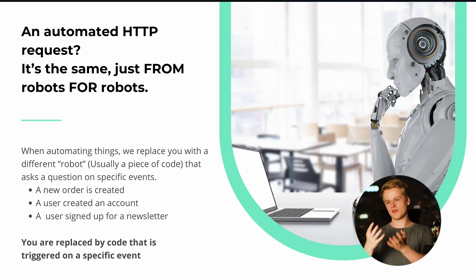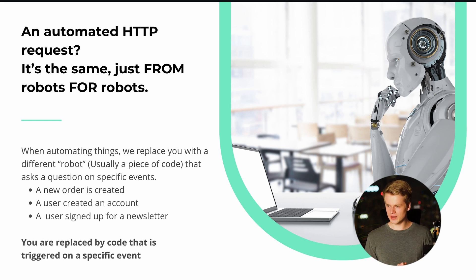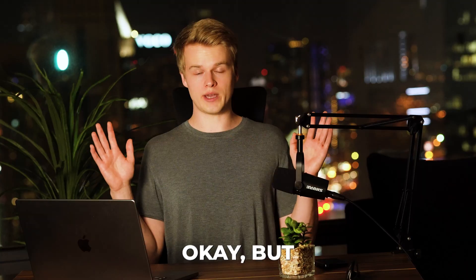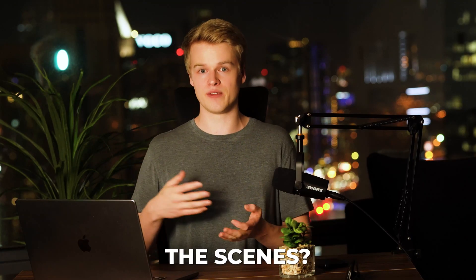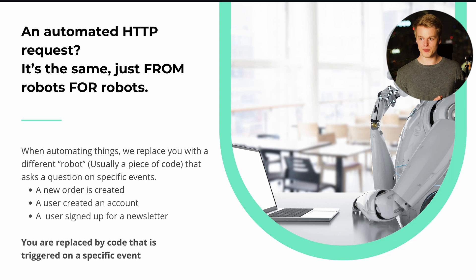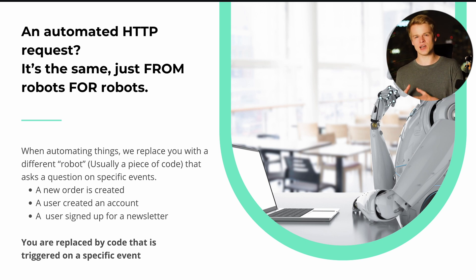You basically let the robot make the request, wait for an answer, and use that answer to do something else. I've been talking about what a request is, but you don't yet know exactly how one looks. You know it's a URL, but what happens behind the scenes when you call it? It's actually a complex process, but I've broken it down to the most common elements that appear in practically any automation scenario.